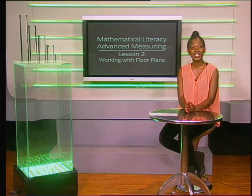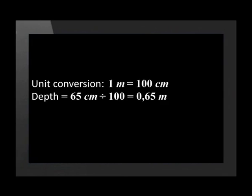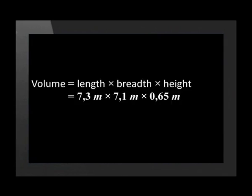To calculate the cost, we first need to calculate the volume. Before we do that, we need all the units to be the same. Therefore, we need to change the 65 centimetres into metres by dividing by 100, so the depth will be 0,65 metres. Now we can find the volume of concrete needed by multiplying 7,3 by 7,1 by 0,65 metres, giving us 33,689 metres cubed. Rounded up, this is 34 metres cubed.